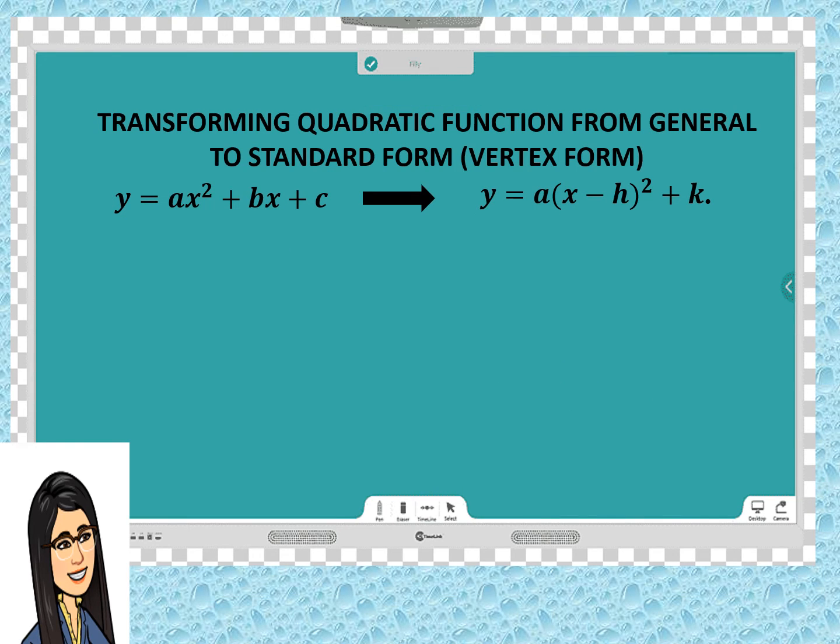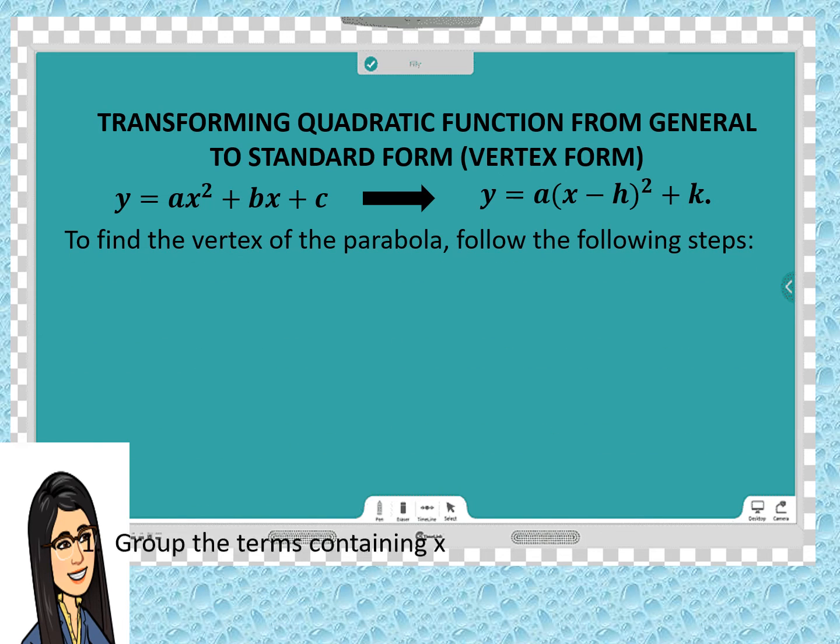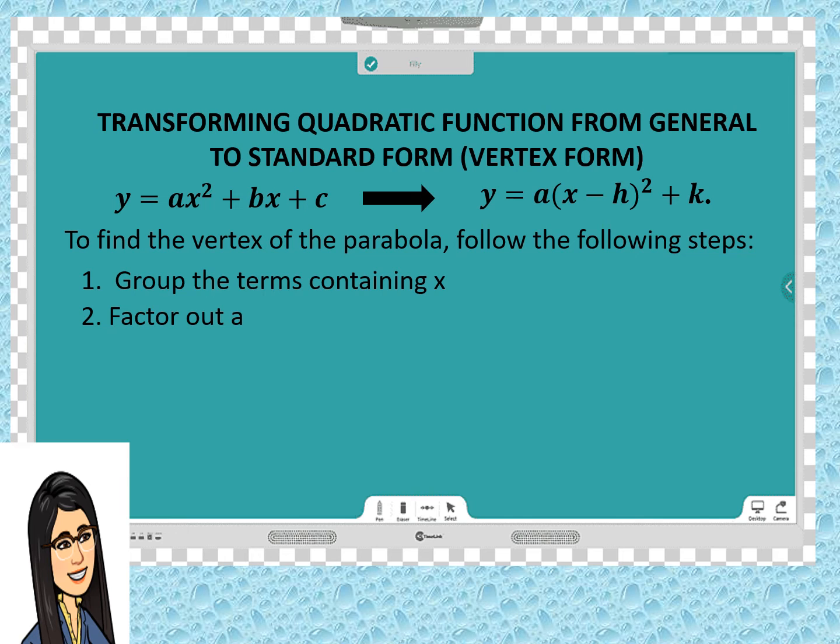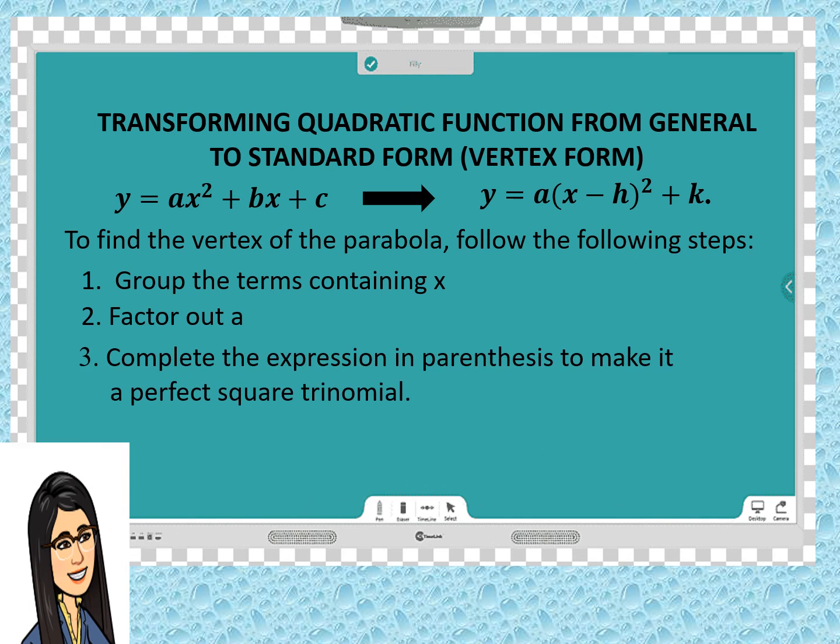So, to find the vertex of the parabola, we have to follow the following steps. First, we have to group the terms containing x. If a is greater than 1, factor out a. Then, we will complete the expression inside the parenthesis to make it a perfect square trinomial. Then finally, express the perfect square trinomial as a square of binomial and simplify the other parts.